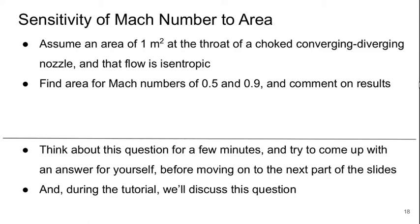Welcome to Part 4 of Lecture 12 of Aerospace Propulsion. So we left off with trying to calculate the areas for Mach numbers of 0.5 and 0.9 if the throat is at a Mach number of 1.